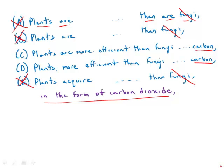D is out because it's lacking a verb. Therefore, the only possible answer remaining is C. So what we have with C: 'plants are more efficient than fungi at acquiring carbon in the form of carbon dioxide and converting it to energy-rich sugars.' C is by far the best answer.